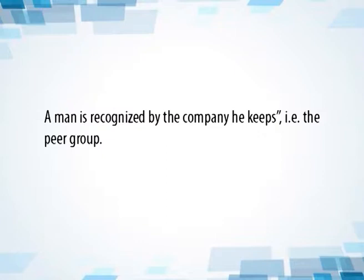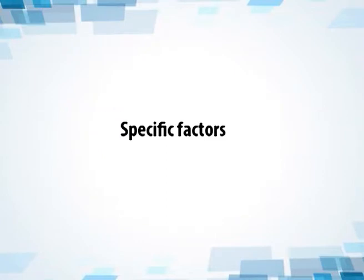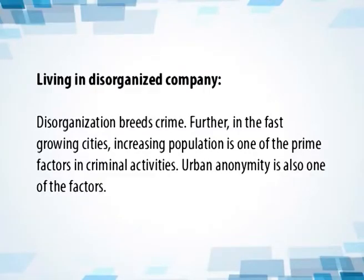Next are the specific factors. The role of the group of which an individual is a part is an important factor in criminal behavior. As a result, an individual develops criminal behavior because of his association with others. Seeking the techniques of crime and growth of mental attitude are the fruits of bad company. Next is living in a disorganized community — disorganization breeds crime. Further, in fast-growing cities, increasing population is one of the prime factors in criminal activities. Urban anonymity is also one of the factors.